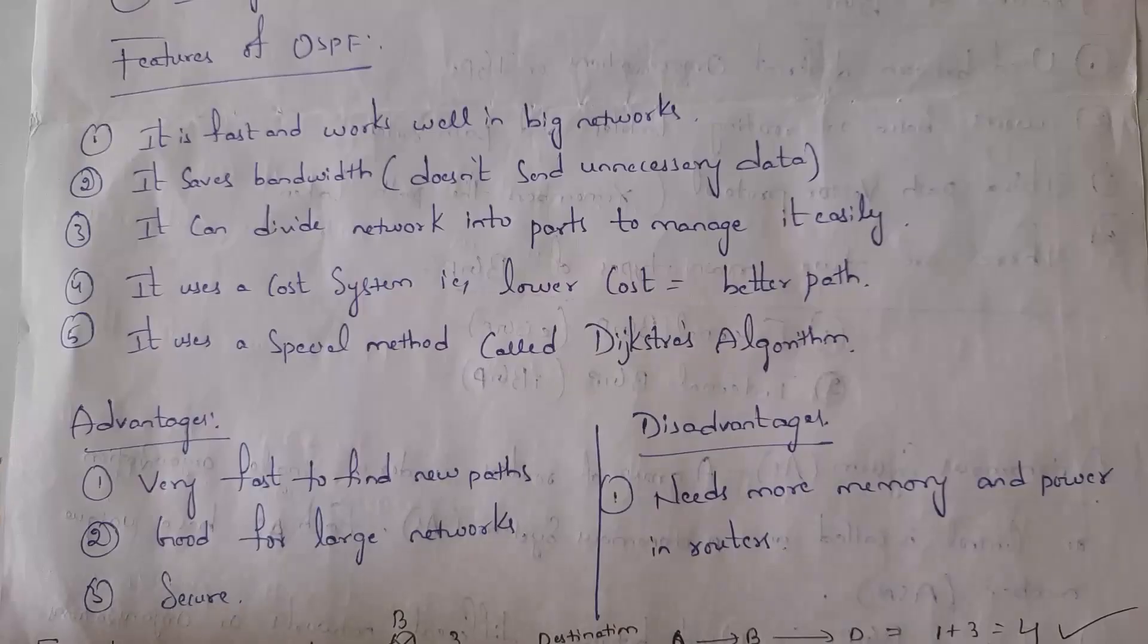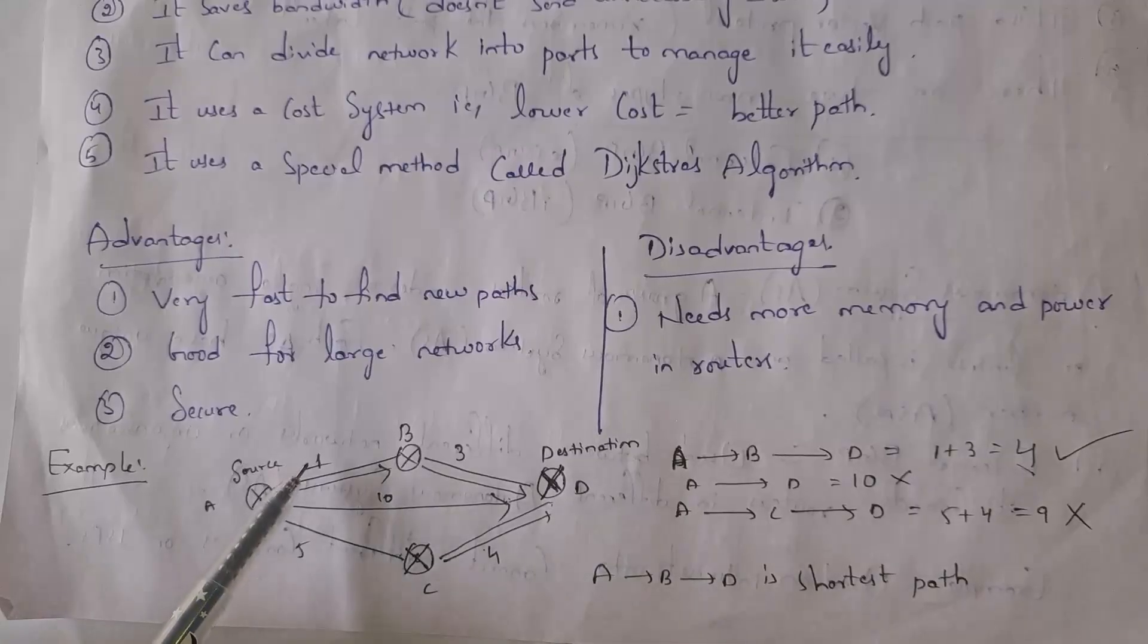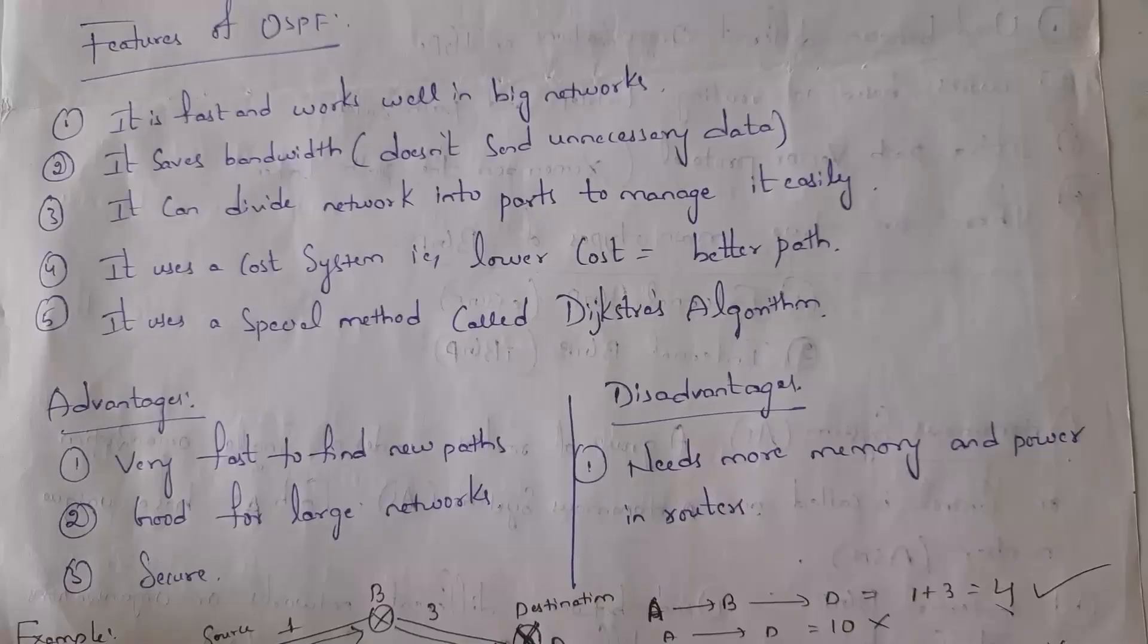OSPF uses a cost system where low cost equals the best path. In this example, one is the cost. When cost is less, that means a better path. In order to find the shortest path, OSPF uses Dijkstra's algorithm. These are advantages of OSPF: it finds new routes fast, it is suitable for large networks, and it is secure.